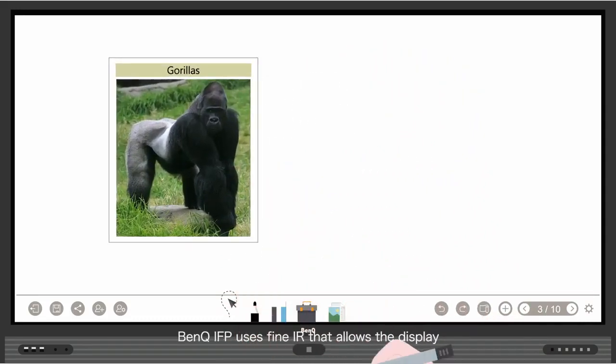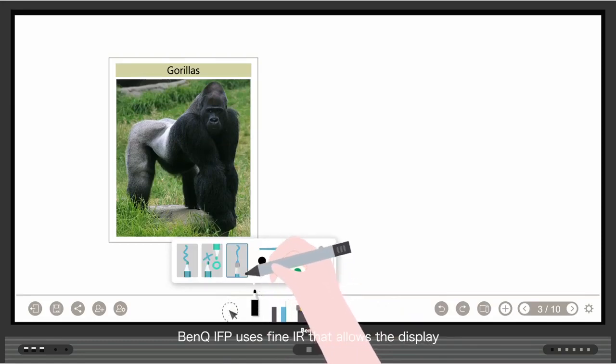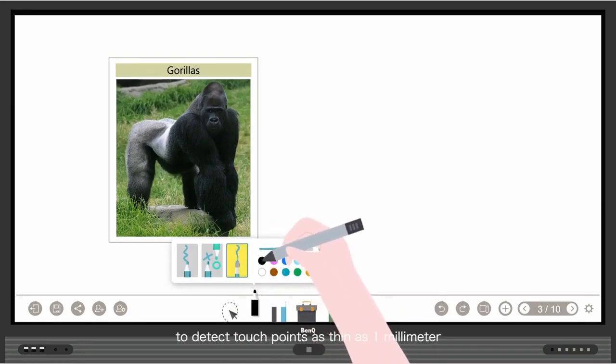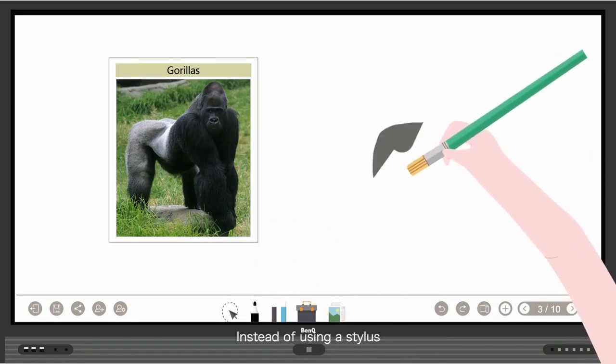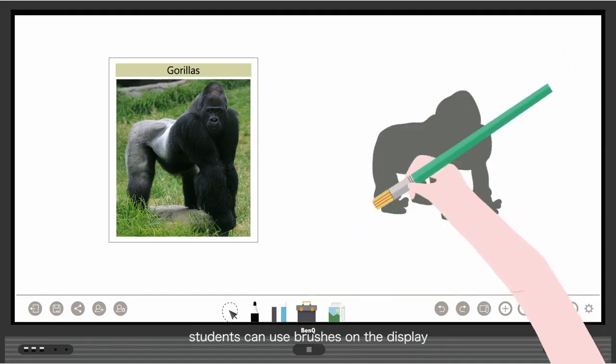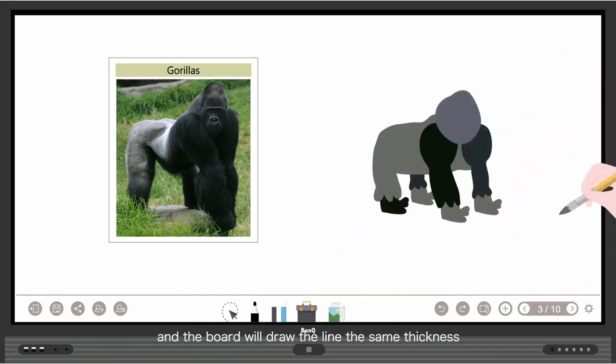BenQ IFP uses Fine IR that allows the display to detect touch points as thin as one millimeter. Instead of using a stylus, students can use brushes on the display, and the board will draw the line the same thickness as the brush's contact point.